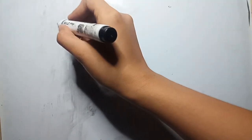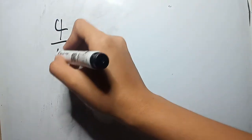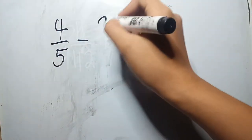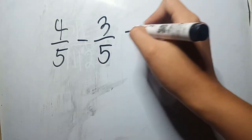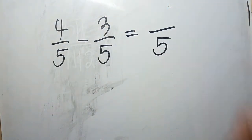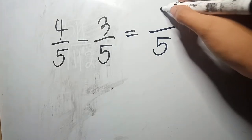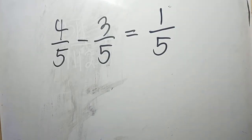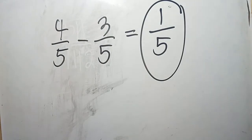Another example in subtracting similar fractions. Let's say, 4 fifths minus 3 fifths. Again, let's just copy the common denominator, which is 5, and then subtract the numerators. 4 minus 3 gives us 1. 1 fifth is already simplified. Therefore, this is already the answer.